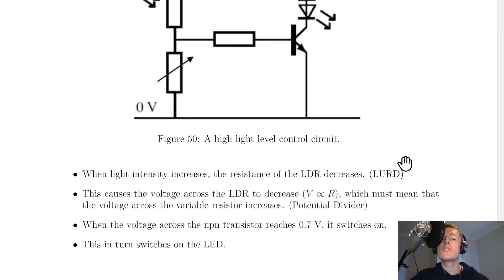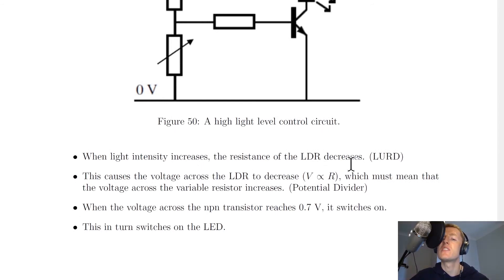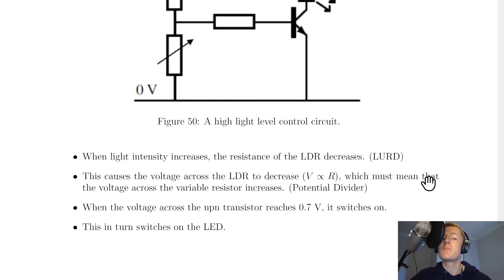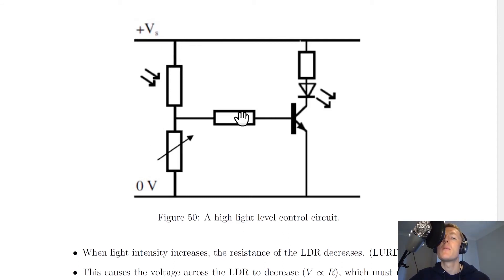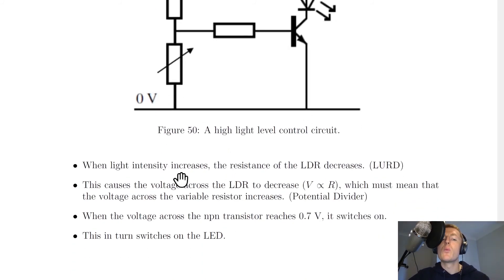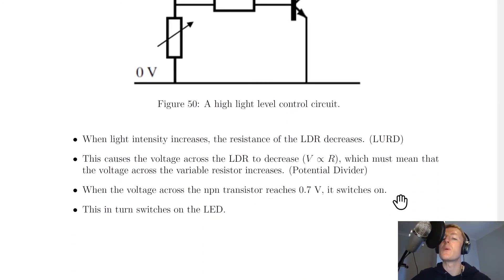When light intensity increases, the resistance of the LDR decreases — that's from the rule LURD: light up, resistance down. If the resistance of the LDR decreases, the voltage across the LDR decreases because V is proportional to R. But this means the voltage across the variable resistor must increase, because it's a potential divider circuit. If the upper component takes less of a share of the supply voltage, the lower component must take more, since the supply voltage splits across the two components.